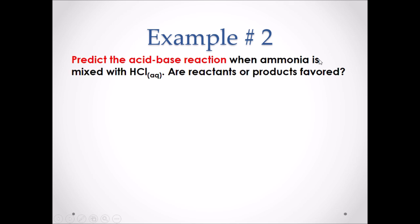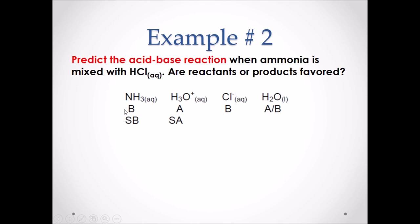Example number two: predict the acid-base reaction when ammonia is mixed with hydrochloric acid. Are the reactants or products favored? Step number one — list all of the species. We have ammonia. Hydrochloric acid is a strong acid, so it will ionize and we list it as H3O+ and its anion Cl-. We also always have H2O available. We label all species as acids or bases and determine that our strongest acid is H3O+ and our strongest base is NH3. These will be the reactants in our chemical equation.